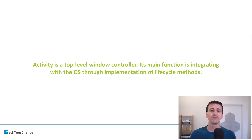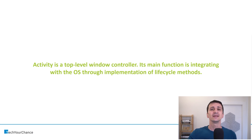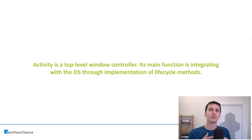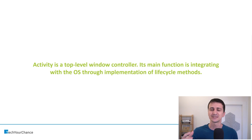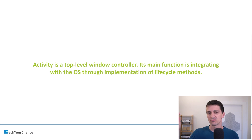Therefore, activity in Android is a top-level window controller. Its main function is integrating with the operating system through implementation of lifecycle methods. Note that it's a top-level controller — it controls an entire window — and can then delegate to lower-level controllers like fragments, views, or composables to handle the actual user interface. Activity doesn't necessarily have to work with user interface directly; it can delegate control over a portion of the window to a fragment, which then draws the UI. Thinking about activities in terms of screens is a non-optimal mental model — activity gains control over a window, and what it does with that window is up to you.